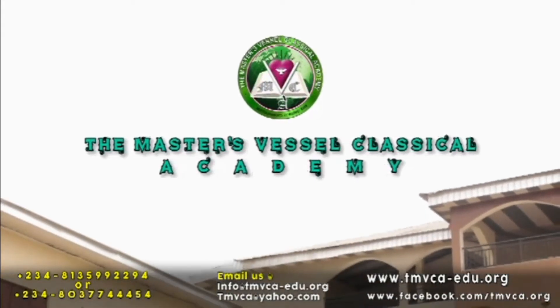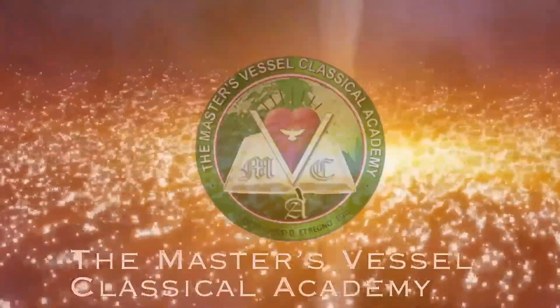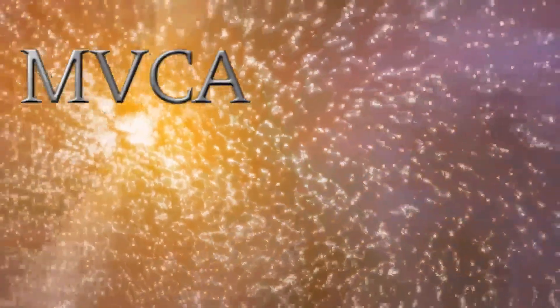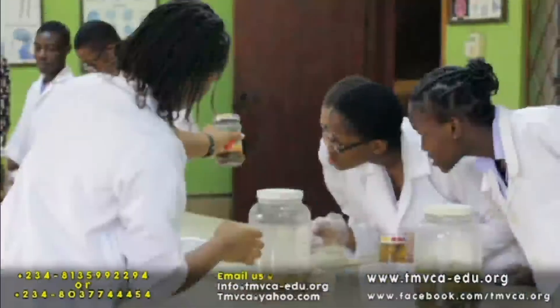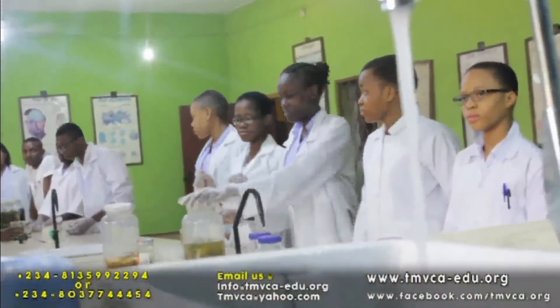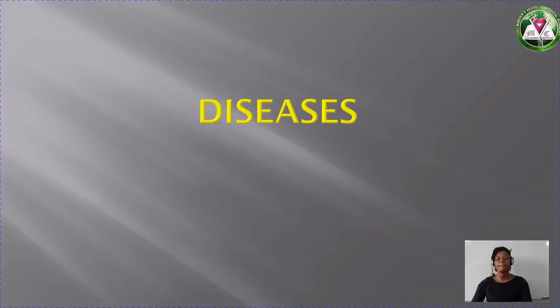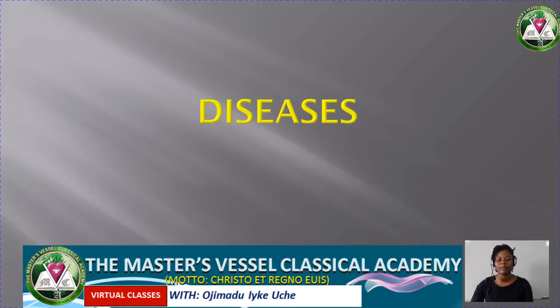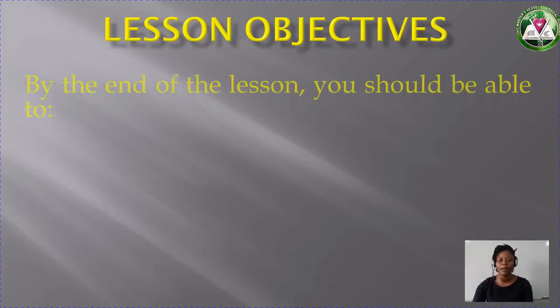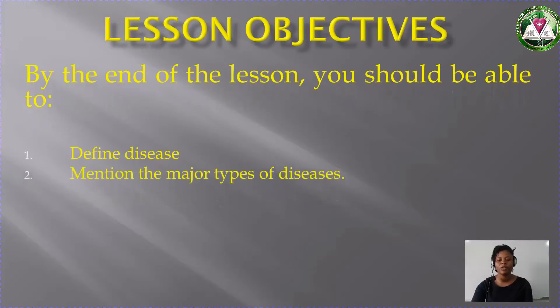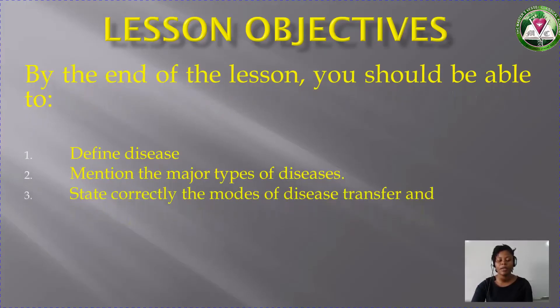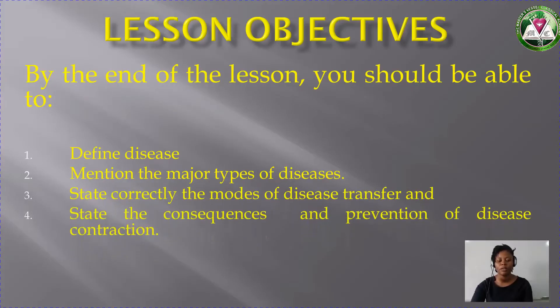I hope you are doing well. You are welcome to basic science class and today we will be discussing disease. By the end of the lesson you should be able to: number one, define disease; two, mention the major types of diseases; three, state correctly the modes of disease transfer; and four, state the consequences and prevention of disease contraction.